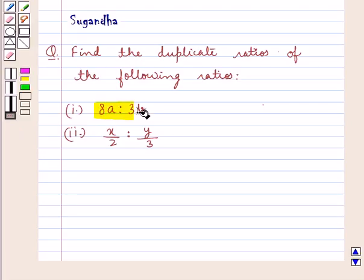First we have 8a is to 3b. In the second part we have x upon 2 is to y upon 3.